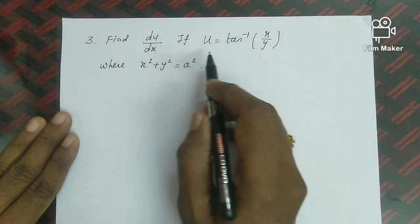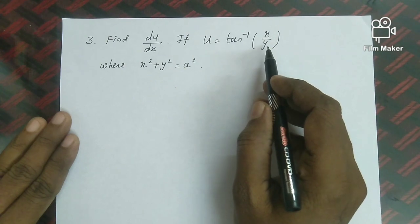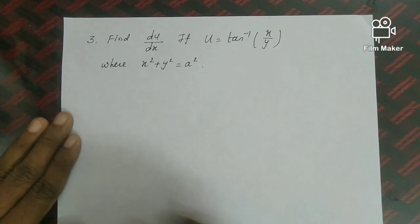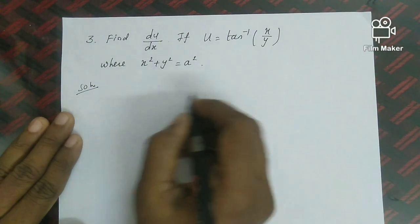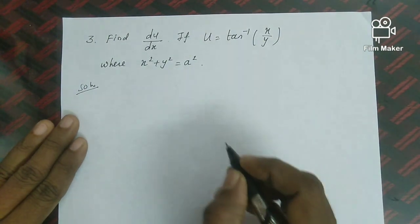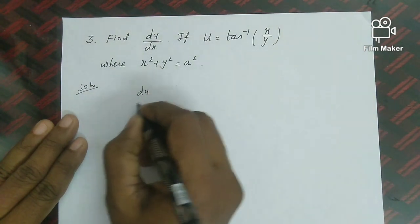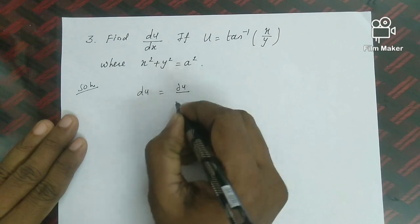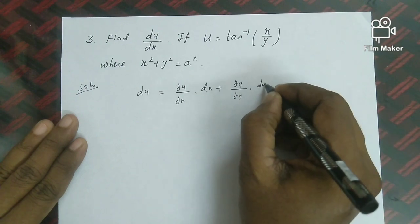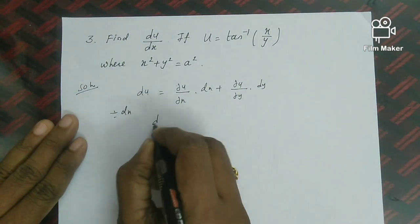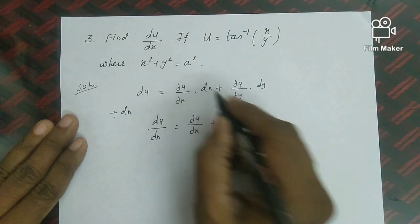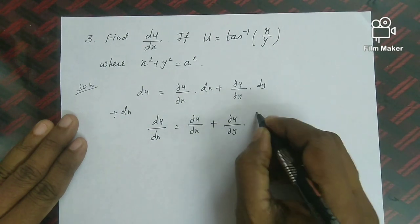Next sum: Find du/dx if u = tan⁻¹(x/y), where x² + y² = a². This is similar to the previous result. Using the same total differential approach, du/dx = ∂u/∂x + (∂u/∂y)·(dy/dx). We identify the three quantities: ∂u/∂x, ∂u/∂y, and dy/dx.